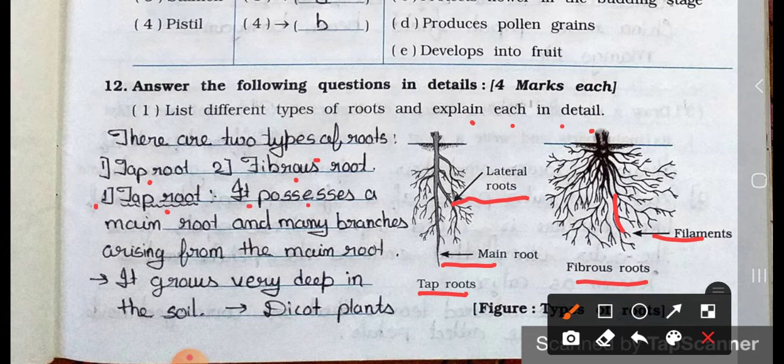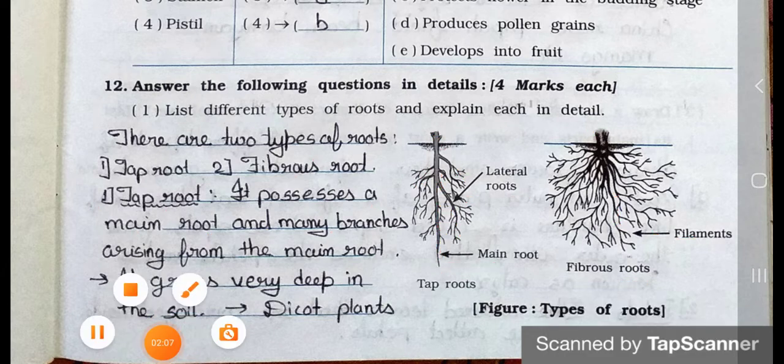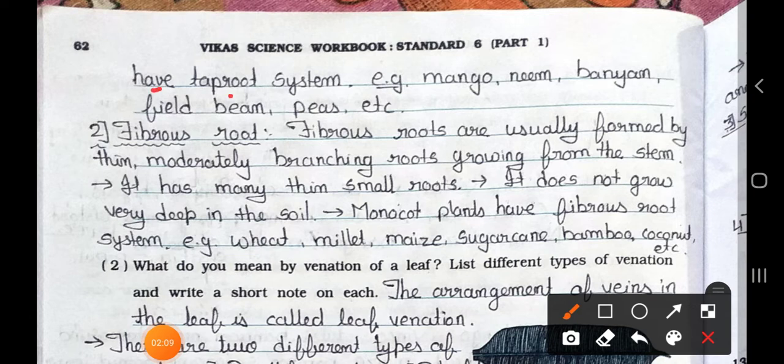Number 1, tap root. It possesses a main root and many branches. Here's many branches are there. Arising from the main root. It's the main root. It grows very deep in the soil. Dicot plants have tap root system. Example, mango, neem, banyan, field bean, peas, etc.